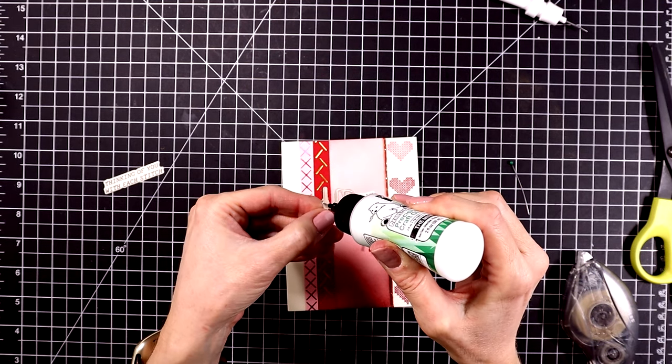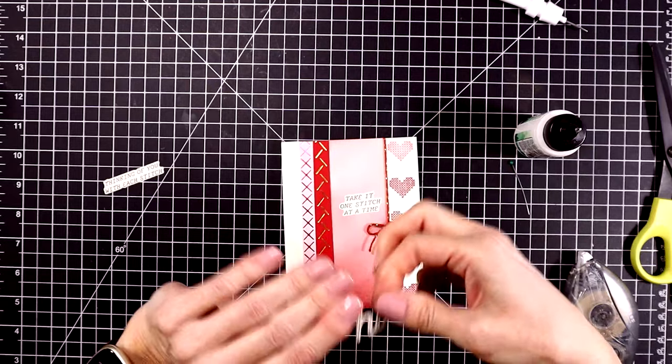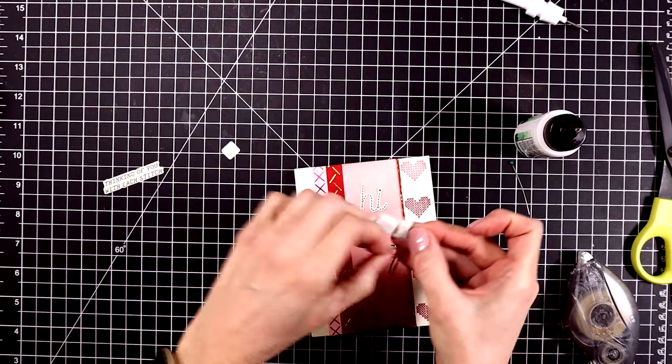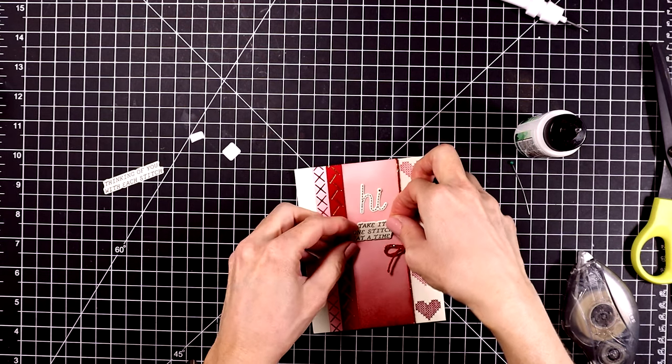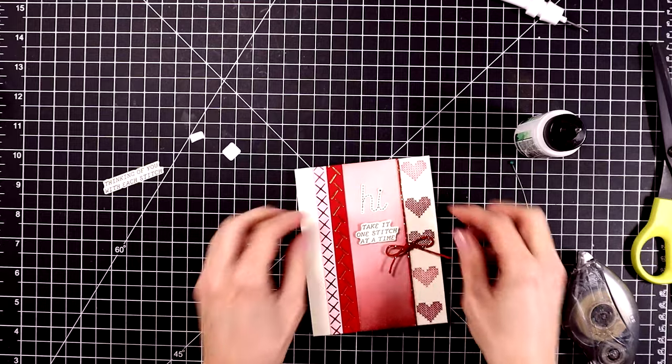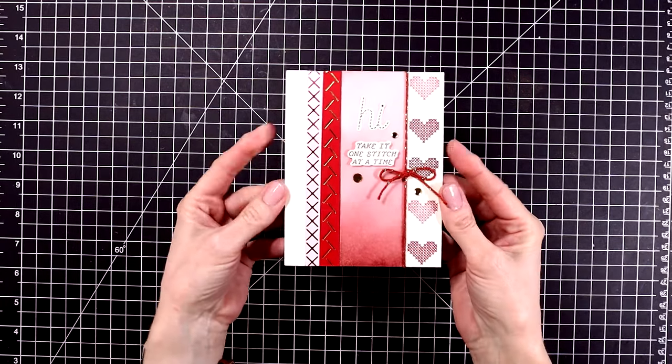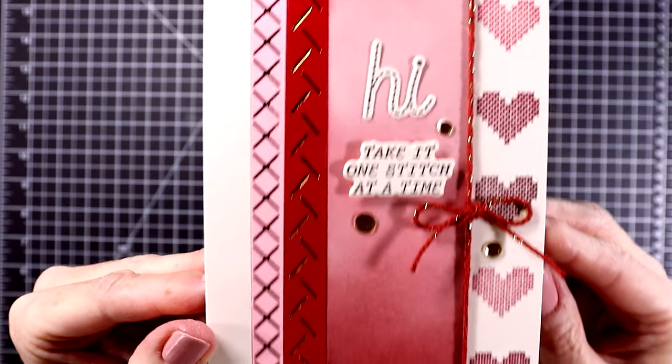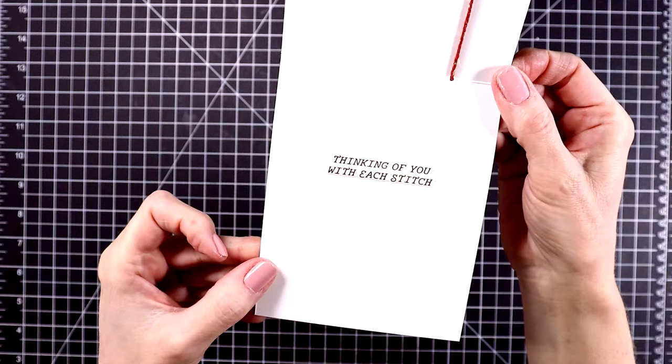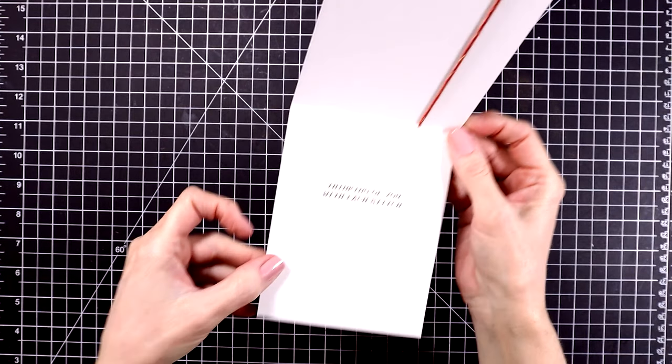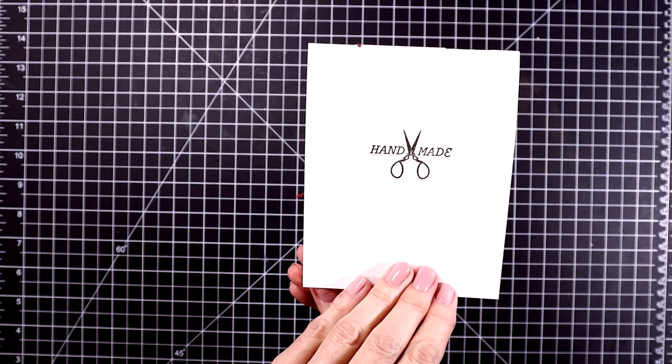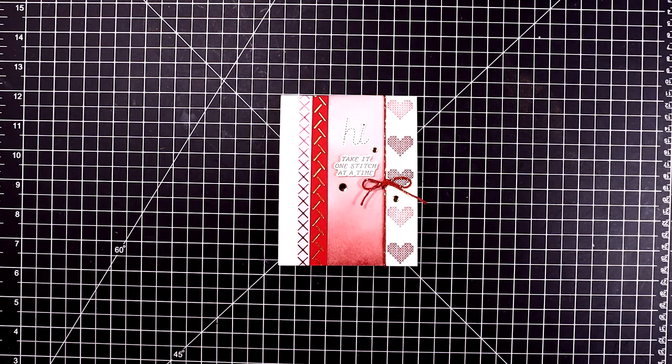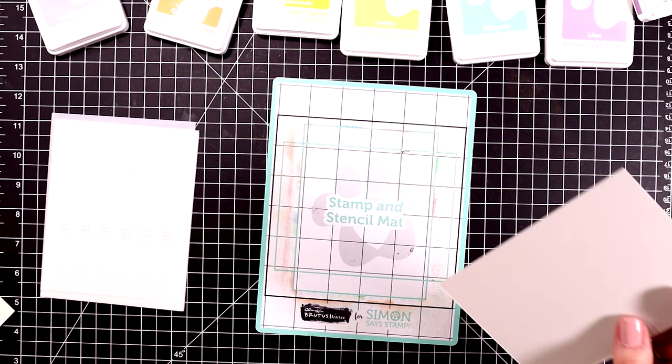And now I'll glue down the sentiments. I used the sentiment that says hi, along with its coordinating die. And under that, I used the sentiment that says take it one stitch at a time. And I used the coordinating die for that as well. And I popped that up with some foam. And here's a close-up look at the card. I used some more of the gold smooth discs on this. On the inside, I used the sentiment that says thinking of you with each stitch, as well as the handmade sentiment on the back of the card. And I've stamped those out on alabaster cardstock and glued those in place.